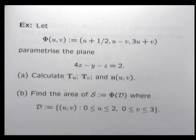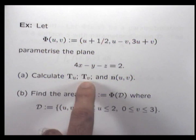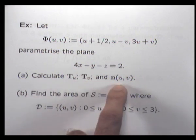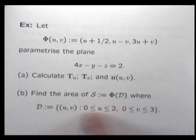Here we're given a parametrization. We are asked to calculate the tangent vectors and this vector n, and find the area of this surface S, where the parameter domain is this rectangle.